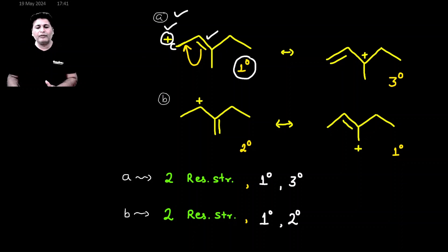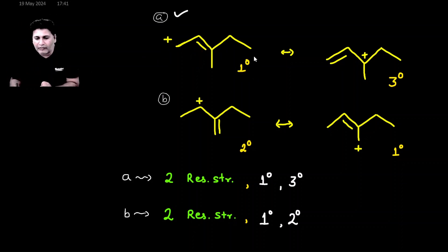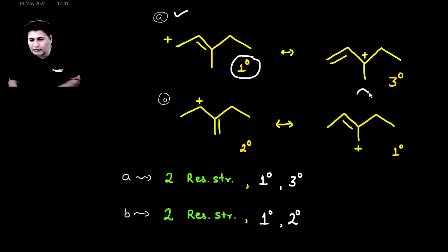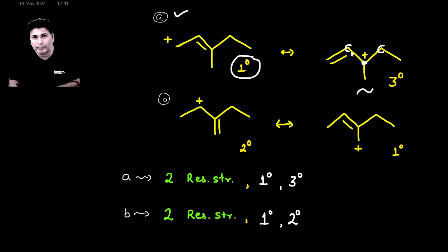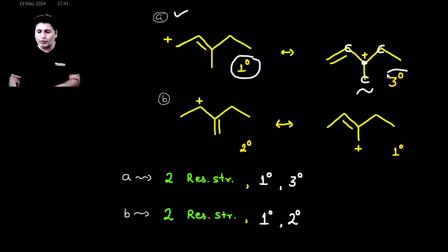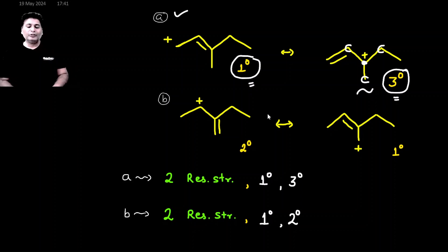So we now have two resonating structures for carbocation A. The left one is one degree. If you observe the second resonating structure, that particular carbon is directly attached with three carbons — one, two, three — so it is a tertiary carbon, three degree. We have got two resonating structures: the left one is one degree and the right one is three degree.